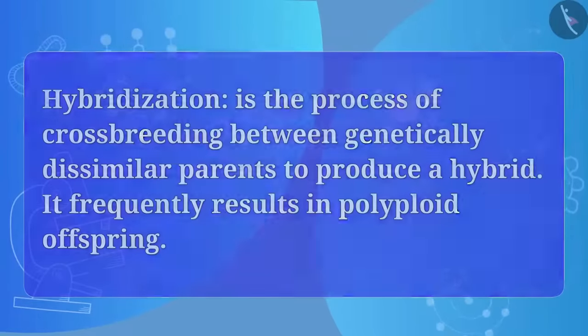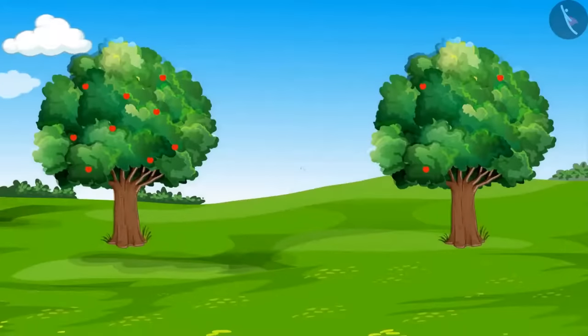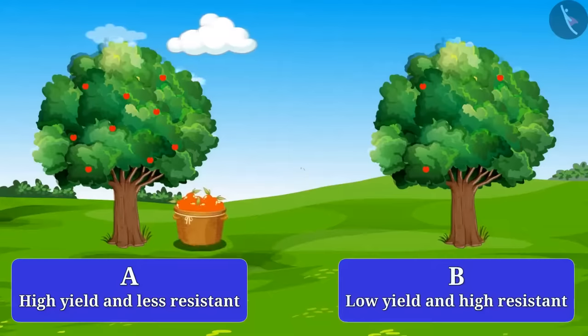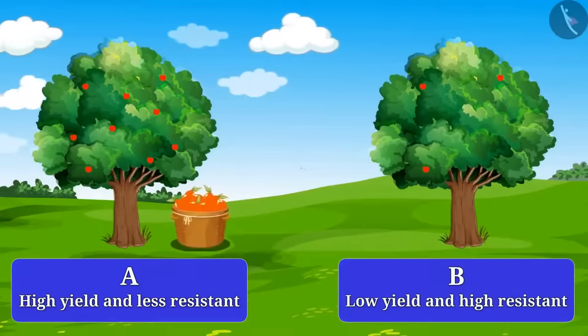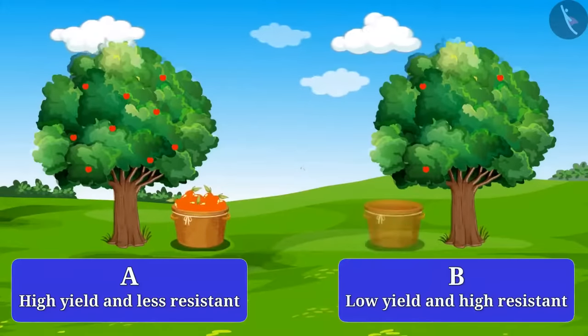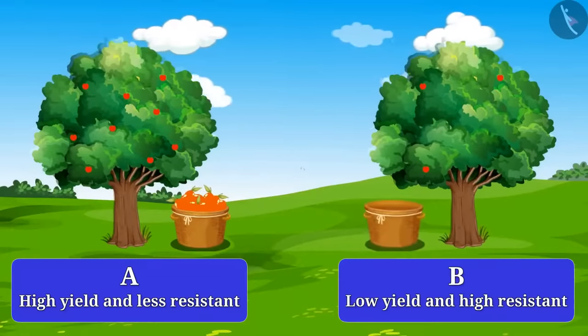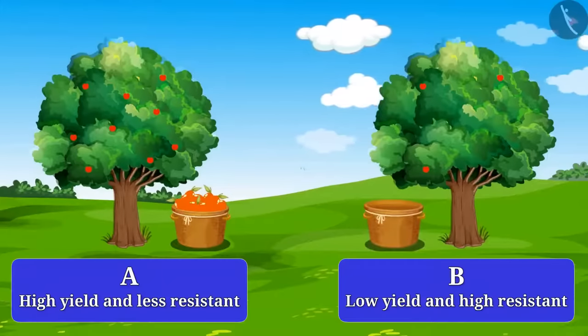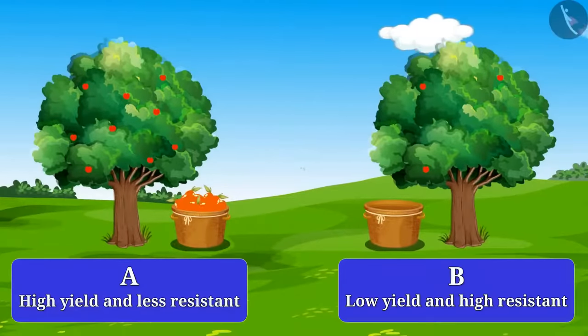Come, let's understand. Suppose you have two types of trees, A and B. Tree A gives high yield and is less resistant towards disease. While tree B gives low yield and is highly resistant to disease. So what qualities do you need for a good harvest?